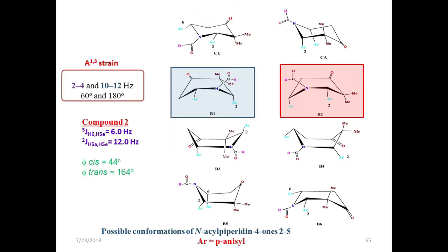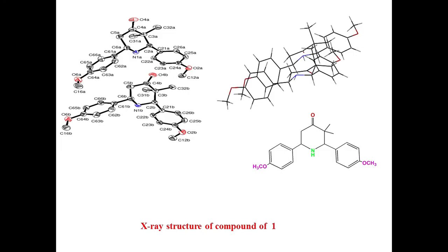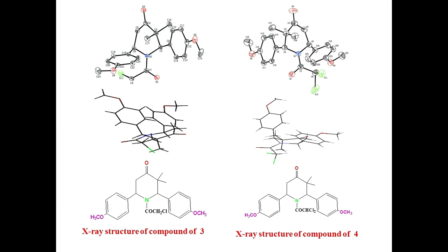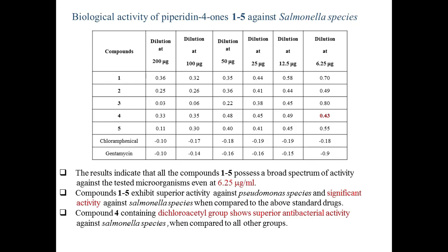The conformational equilibrium of the compound was determined, and the structure was confirmed by X-ray crystallography showing a boat conformation. Antibacterial activity was evaluated using chloramphenicol and tetracycline as standards. In vitro antibacterial testing against Pseudomonas and Salmonella showed that the dichlorostyryl derivative exhibited superior antibacterial activity against Salmonella compared to all other groups, at 6.5–25 micrograms/mL.